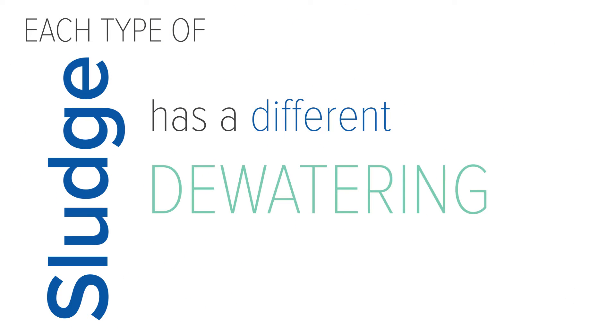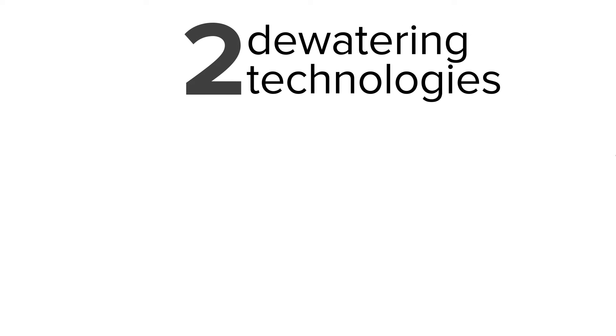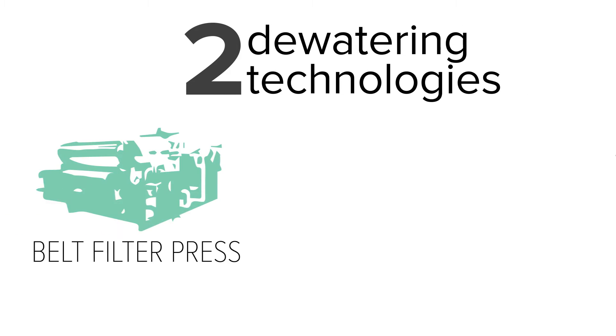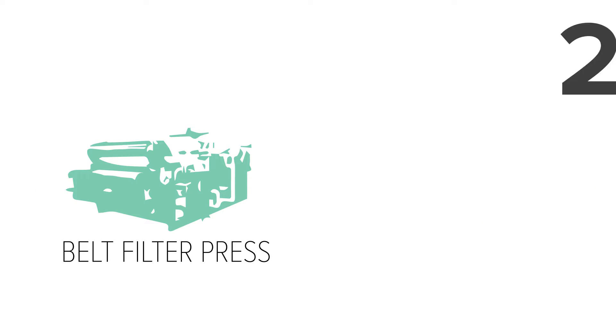Each of these sludges has a different dewatering ability. There are two widely used technologies in the market: the Belt Filter Press and the centrifuge.